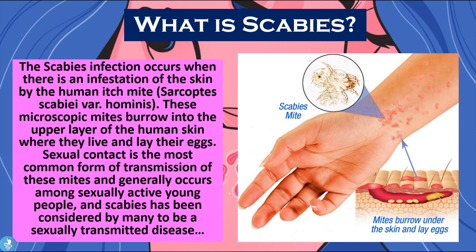From this definition we get that the infestation is caused by mites called Sarcoptes scabiei variant hominis — 'variant hominis' meaning the human variant. They are tiny microscopic insects that burrow into the upper layer of the human skin and lay their eggs there. Scabies is generally transmitted by direct skin-to-skin contact, most commonly in younger individuals during sexual intercourse, which is why it's considered by many to be an STD.